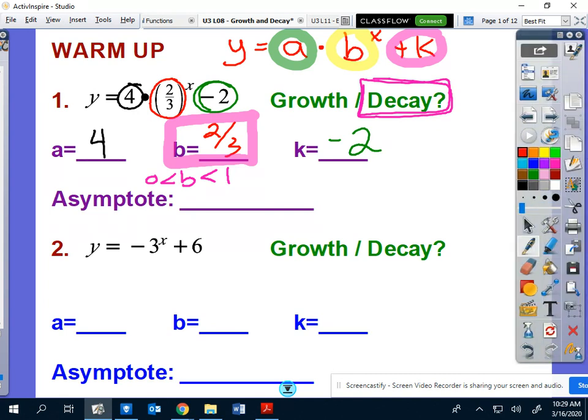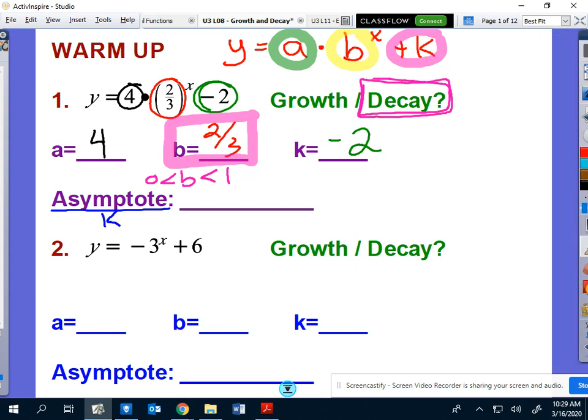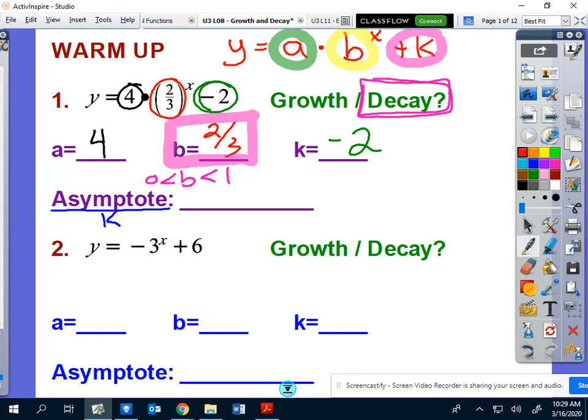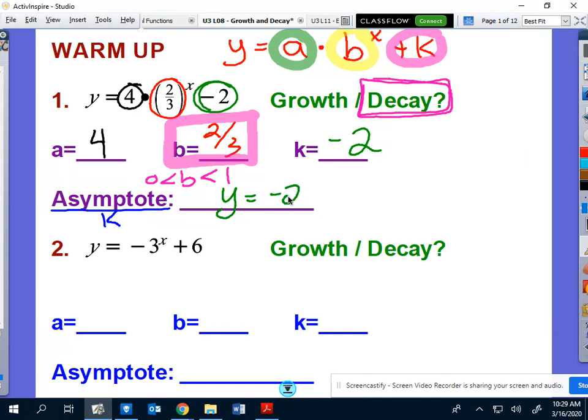The last component is to determine where is your asymptote, and your asymptote is connected to the k value. Whatever the k value is, that's your asymptote. But the way we write it is because it's a horizontal line. The way we write it is we write it as y equals, in this case, negative two. So your asymptote always comes from the fact that it is a horizontal line. So that is going to be y equals your k value, in this case, y equals negative two.